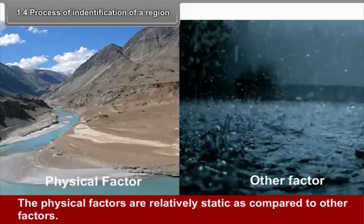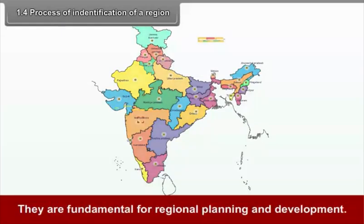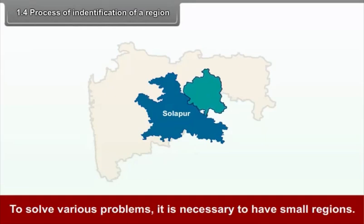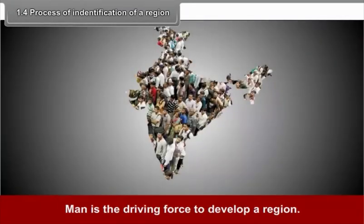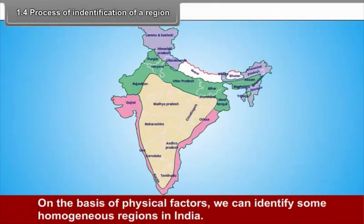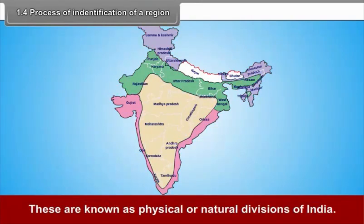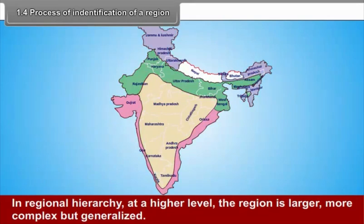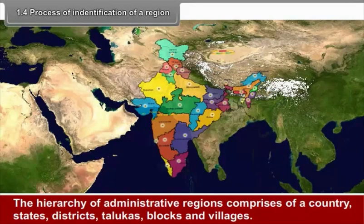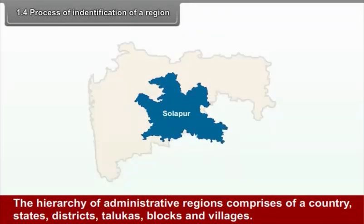The physical factors are relatively static compared to other factors and are fundamental for regional planning and development. To solve various problems, it is necessary to have small regions. Man is the driving force to develop a region. On the basis of physical factors, we can identify homogenous regions in India, known as physical or natural divisions. In regional hierarchy, at a higher level the region is larger, more complex but generalized. The hierarchy of administrative regions comprises a country, state, district, taluka, blocks, and village.